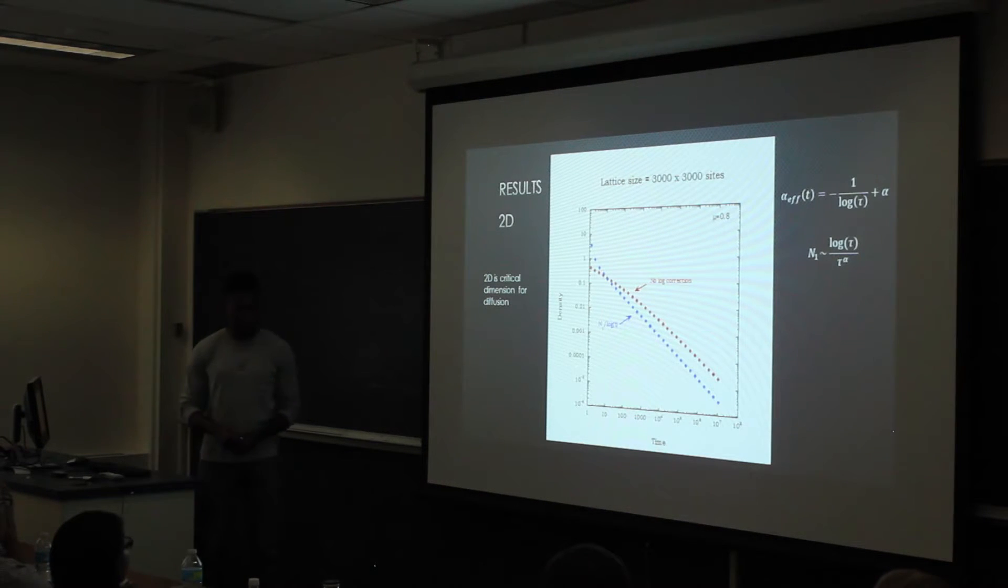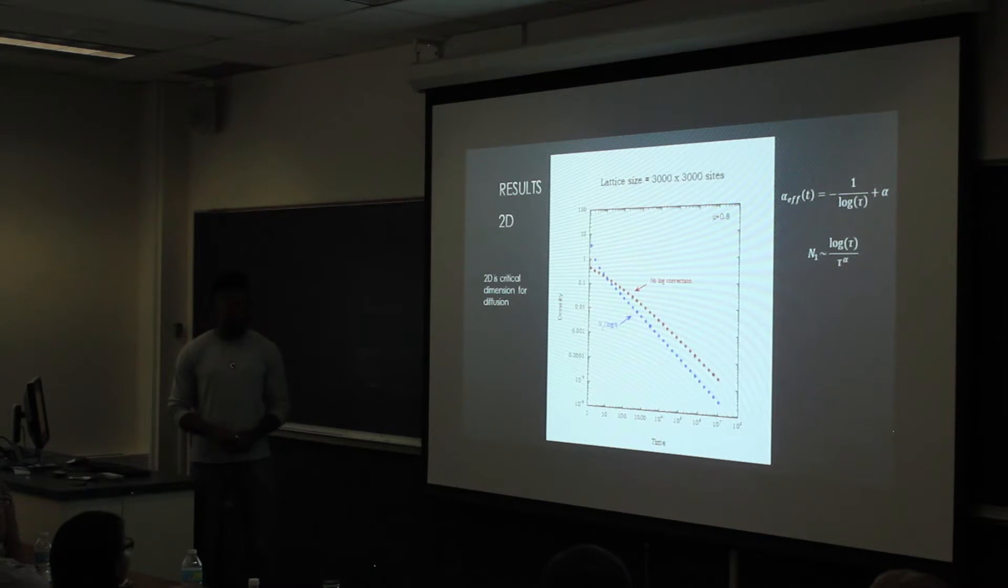And these are results of a two-dimensional run on mu equals 0.8. As you can see, I increased the lattice size to 3,000 by 3,000 instead of 1,000 by 1,000.